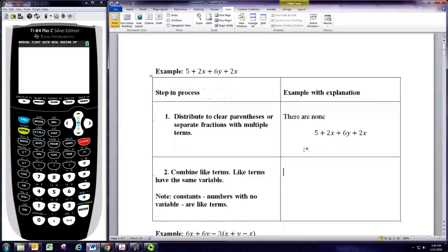For the combining like terms step, we have four terms. 5 is a constant term, that's a term with no variable. And then the other three are variable terms.